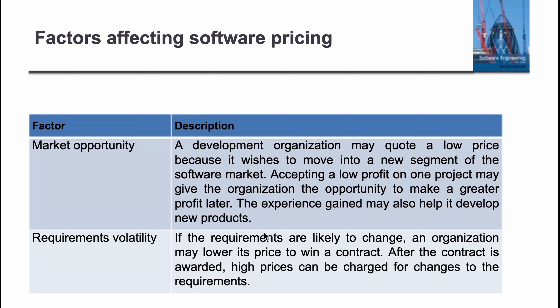Requirements and volatility: if the requirements are likely to change, an organization will load its price low to win a contract. If we know requirements can change in future, we say our price is this much and we will develop the software for you. But when requirements change, the price will increase. After the contract is awarded, high prices can be charged for changes to the requirements. This is smart work — we get the customer into the contract, and after that we charge more.